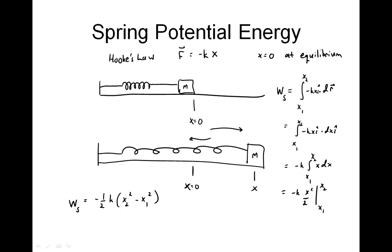Since potential energy is the negative of work, the potential energy due to the spring equals positive one-half k times (x2² minus x1²). If the initial position is at equilibrium, x1 equals zero, and so the spring potential energy equals one-half k times x², where x is the distance from the equilibrium position. I can think of no reasonable scenario where you would want the datum — the zero value for x — to be anything other than the equilibrium position.